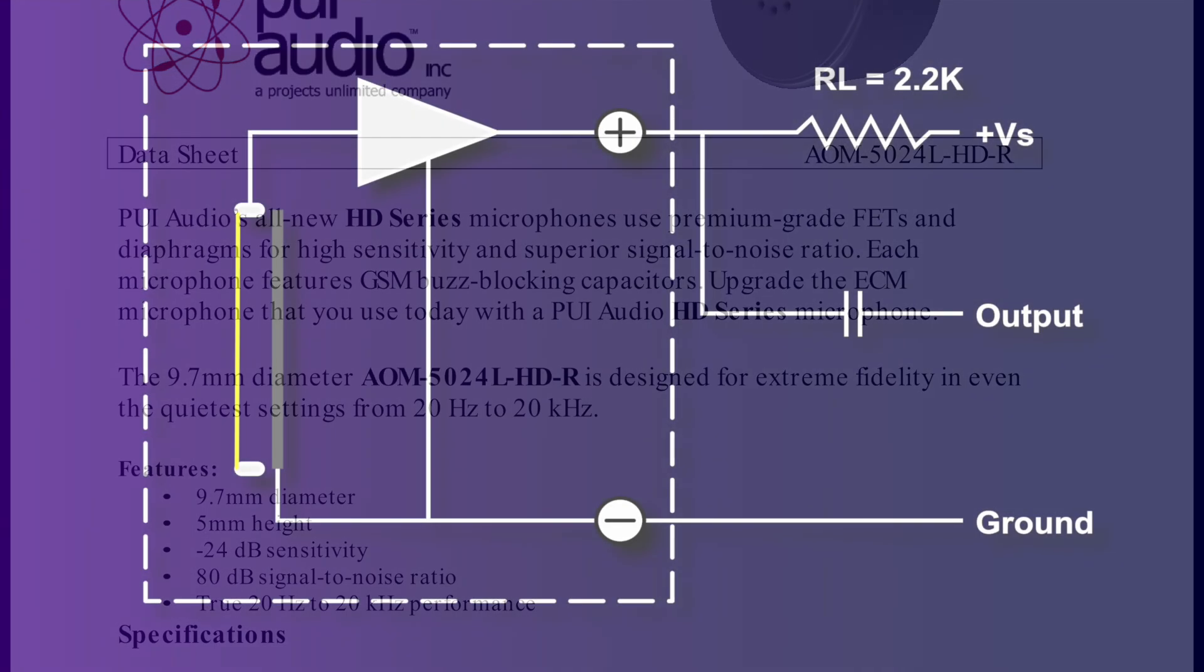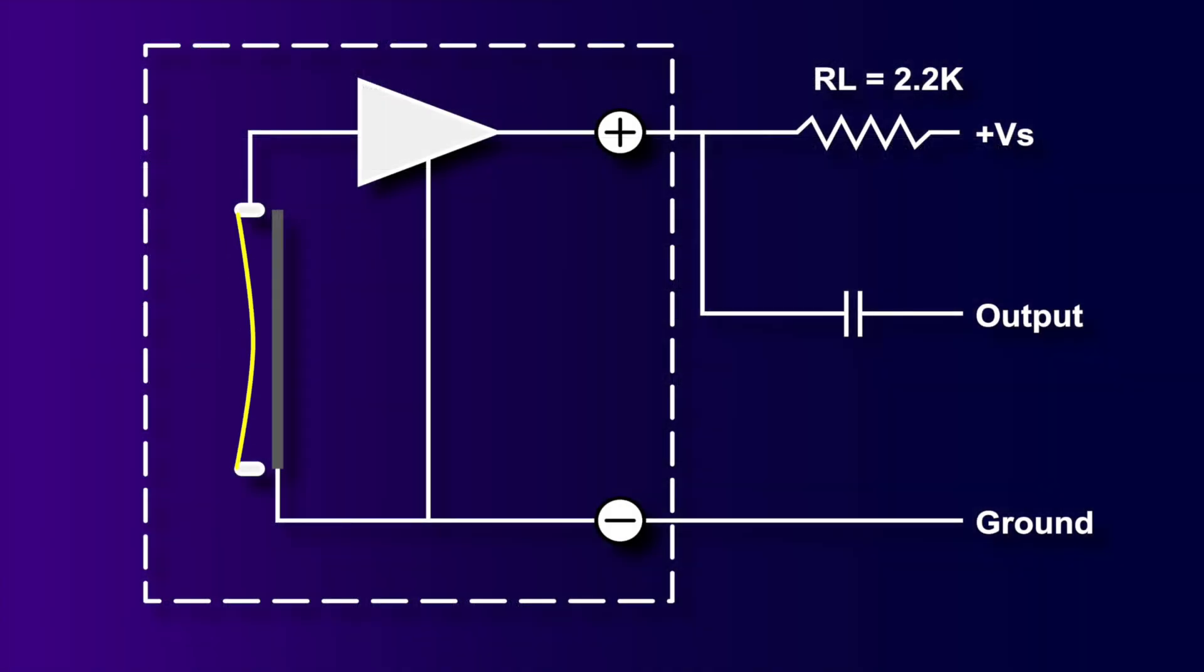What makes this capsule, and a couple others we will use nice, is they have a little field effect transistor, or FET, already inside, making it very easy for us to interface it to a recording device.